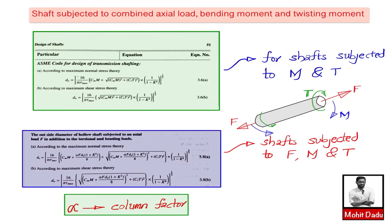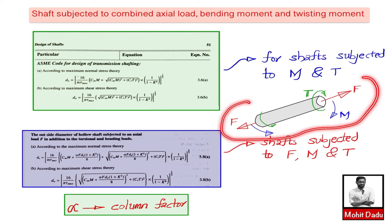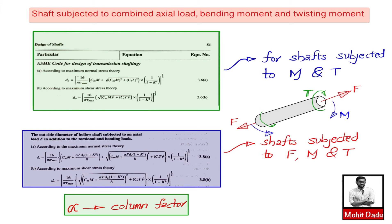So far we have studied the design of shafts subjected to bending moment and twisting moment. In this video, we will study how to design a shaft subjected to axial, twisting, and bending moment combined. When axial force f, bending moment m, and torque t act together, we use equations 3.8a and 3.8b according to maximum normal and shear stress theories. The only extra terms are the axial force f and the column factor alpha, which must be evaluated separately.